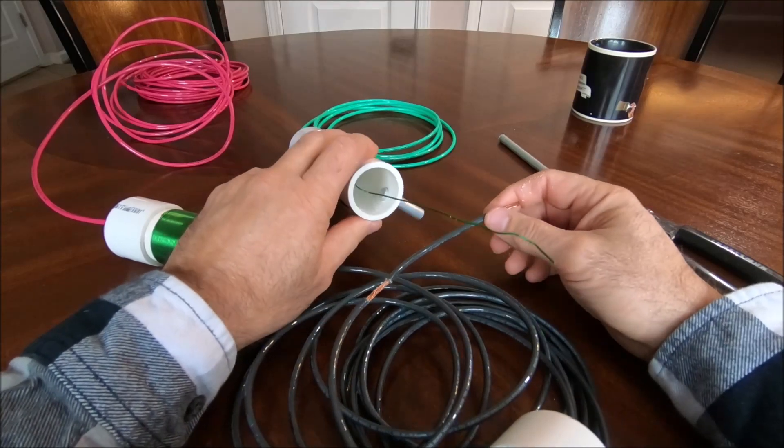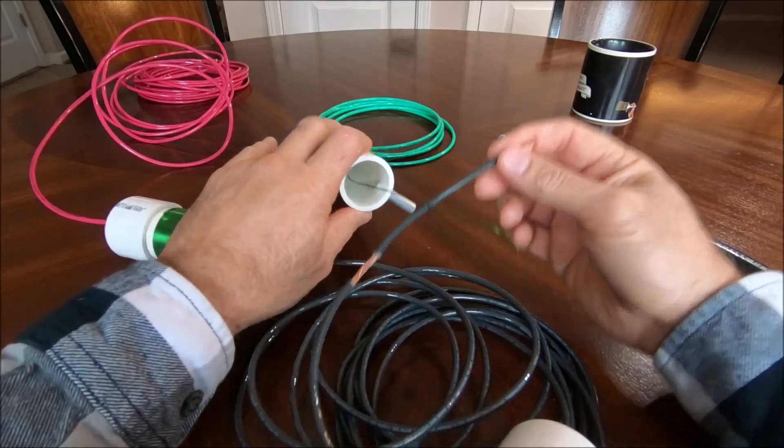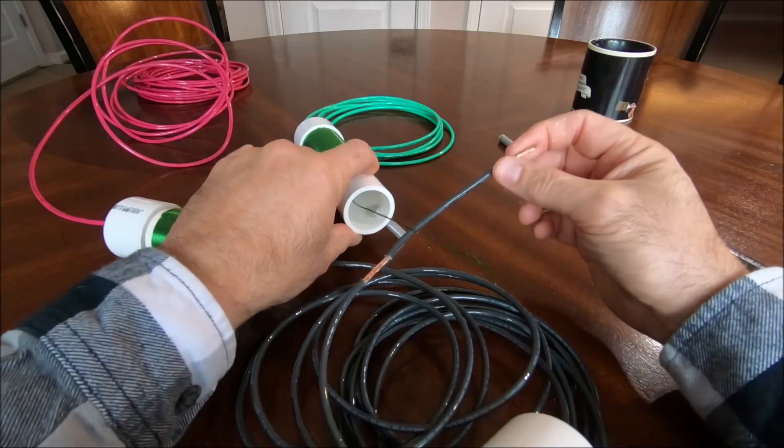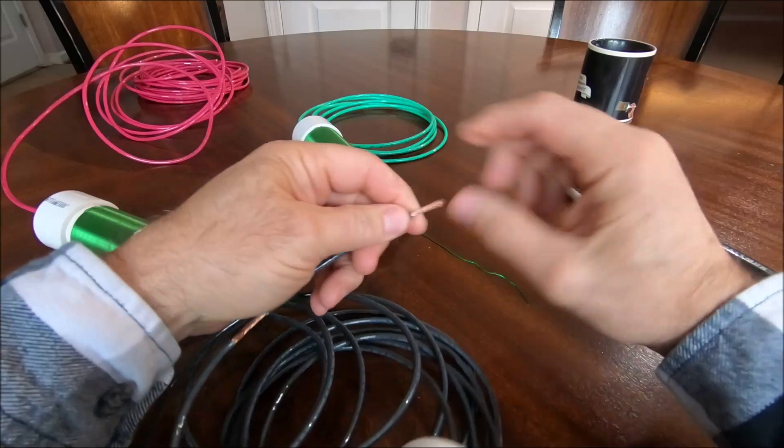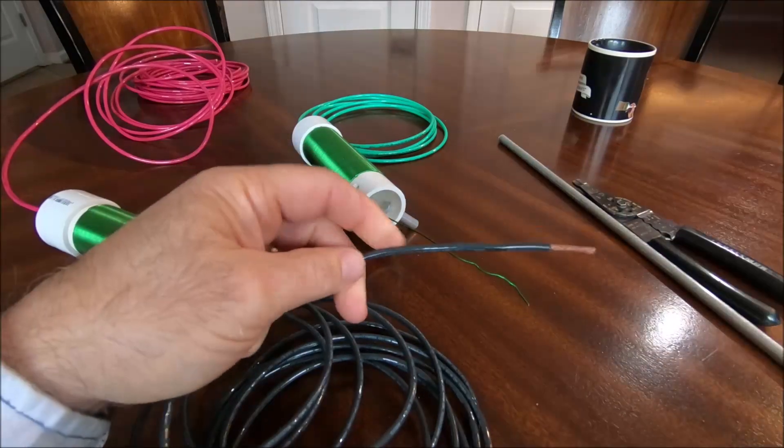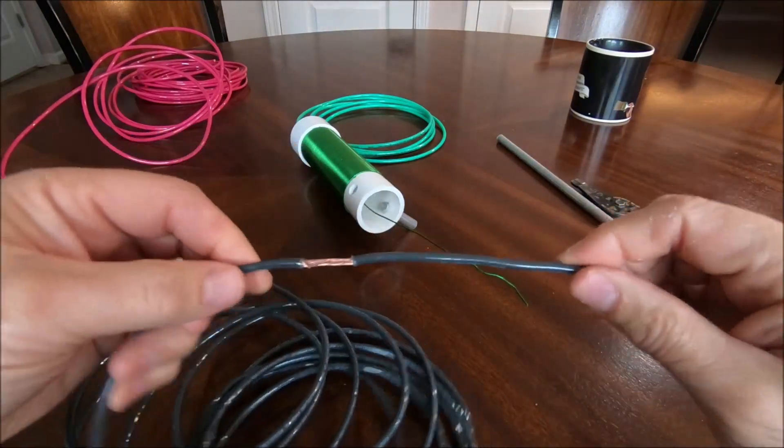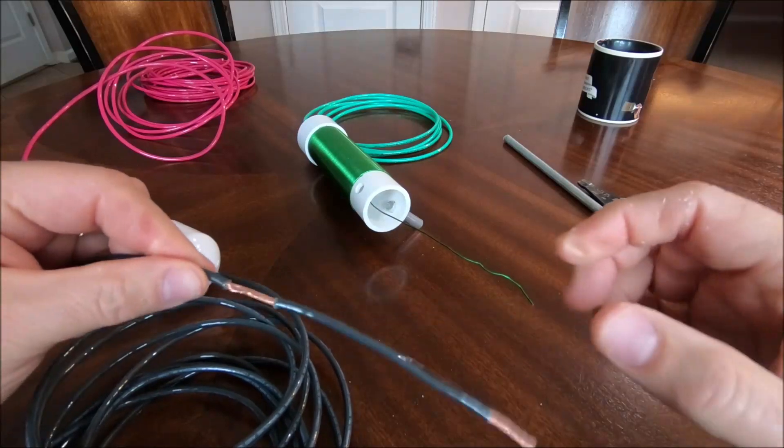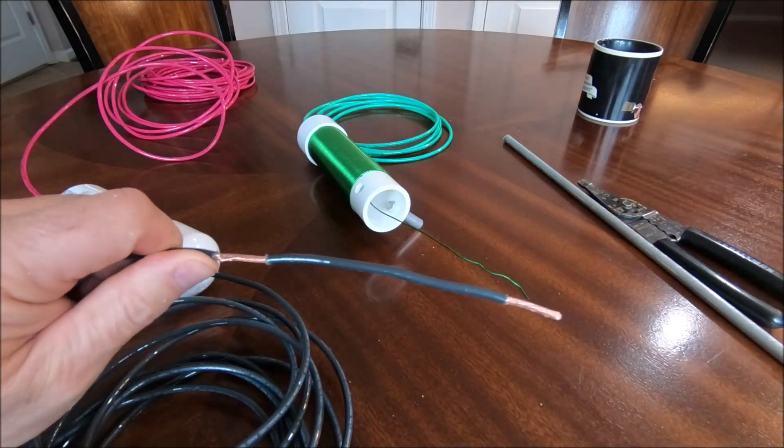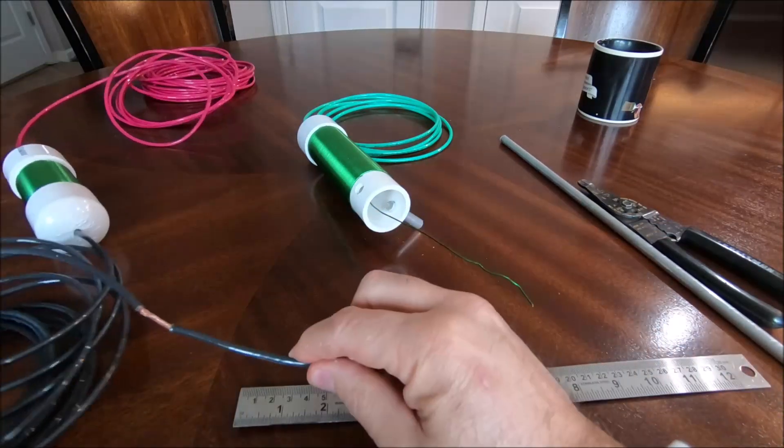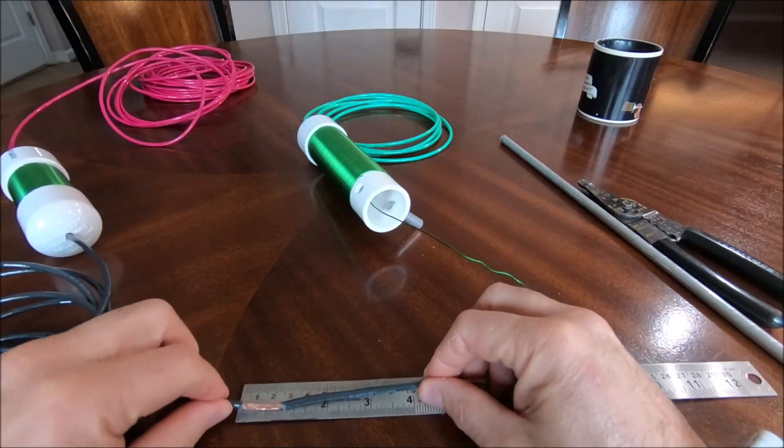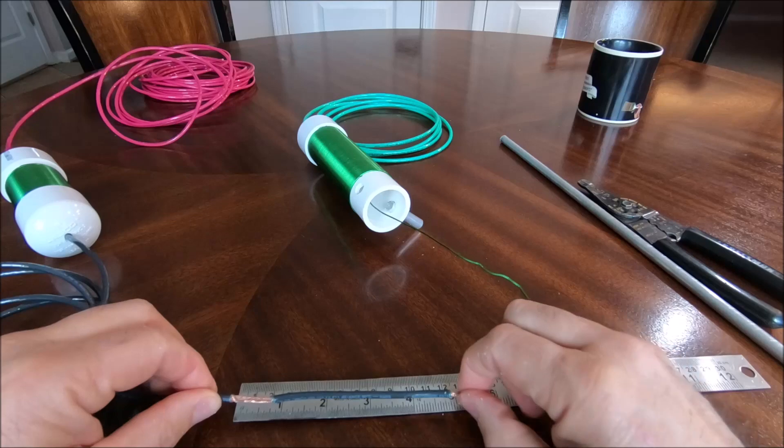So in order to do this I wanted to kind of show you guys how I assemble these things, how this one's put together. Obviously without the solder. So first thing you got to do is strip this wire. And I'll show you this little ruler here. Basically this is about an inch. This is about an inch. This is about four inches of insulation here.